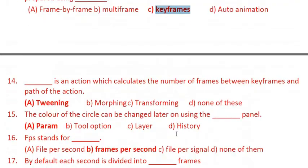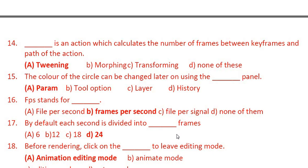Question 14: This is an action equation which calculates the number of frames between keyframes and the path of the action. That is known as the tweening effect. Note: the spelling given in the textbook is incorrect — it should be T-W-I-N-I-N-G, not with a double E — but I use the same spelling as the textbook.